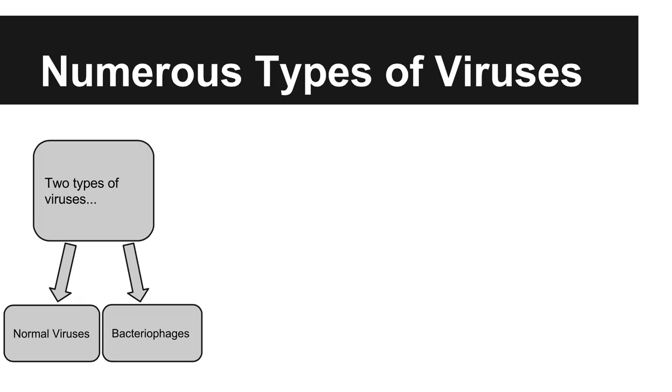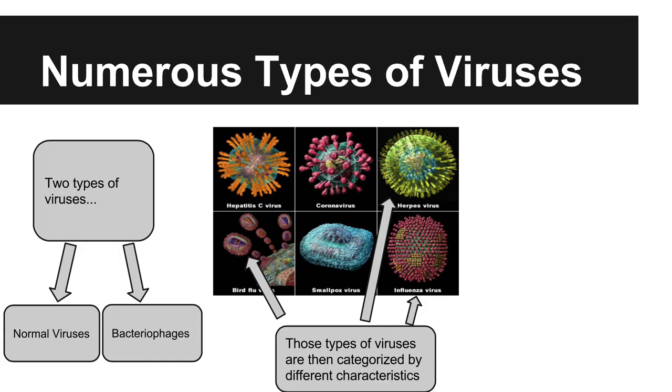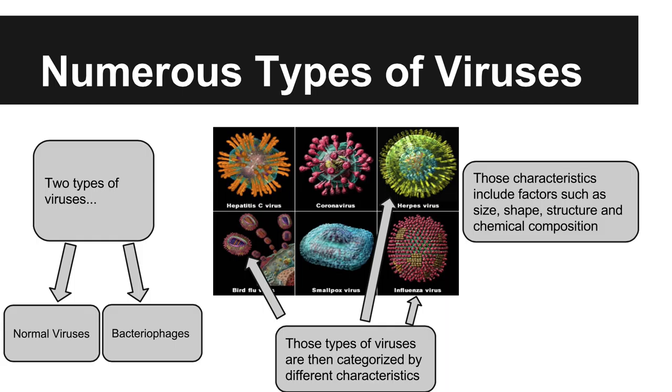Generally speaking, viruses are identified based upon the size, shape, chemical composition, and structure of its genome. What I mean by the chemical composition is that viruses are different due to the arrangement, type, and ratio of atoms in the molecules of substances. A genome is a set of genes or genetic material of an organism. The genome includes both the genes and non-coding sequences for DNA or RNA.